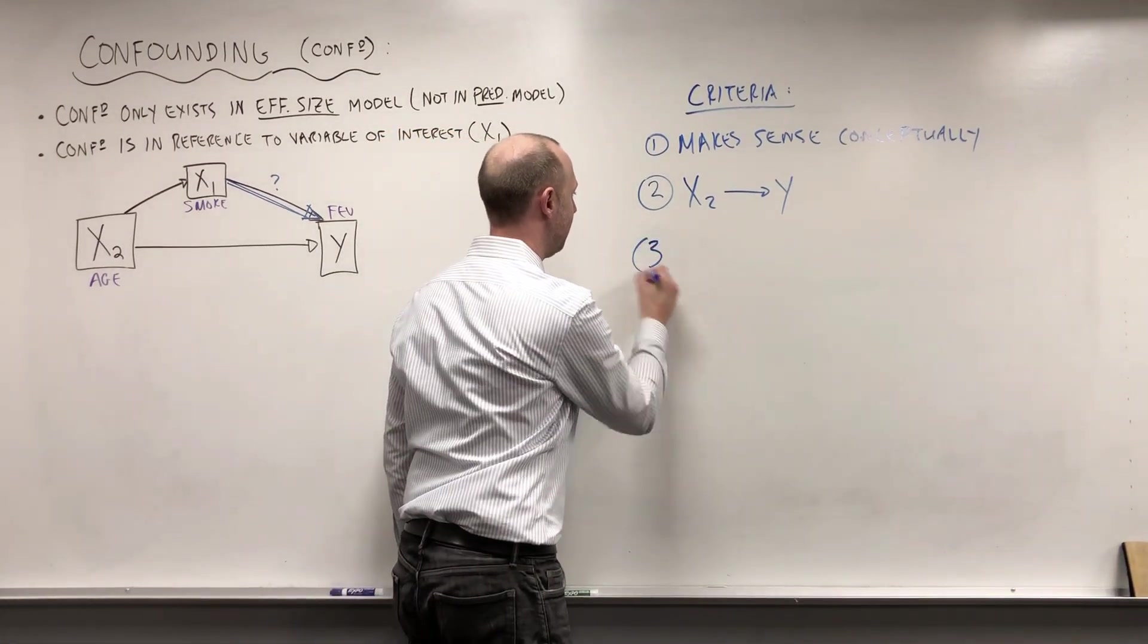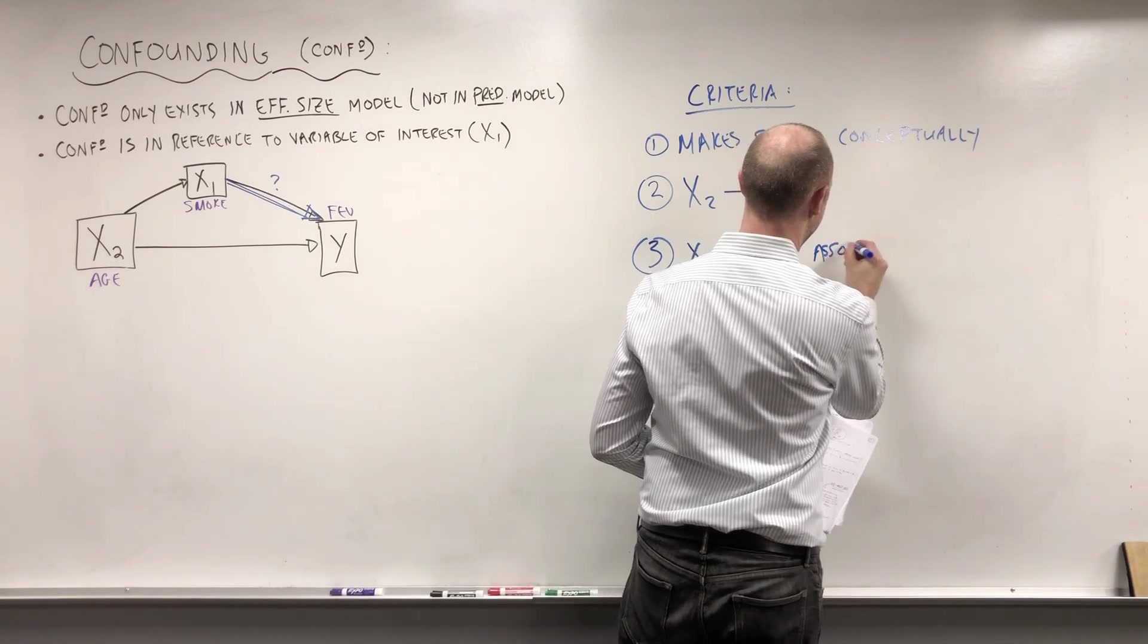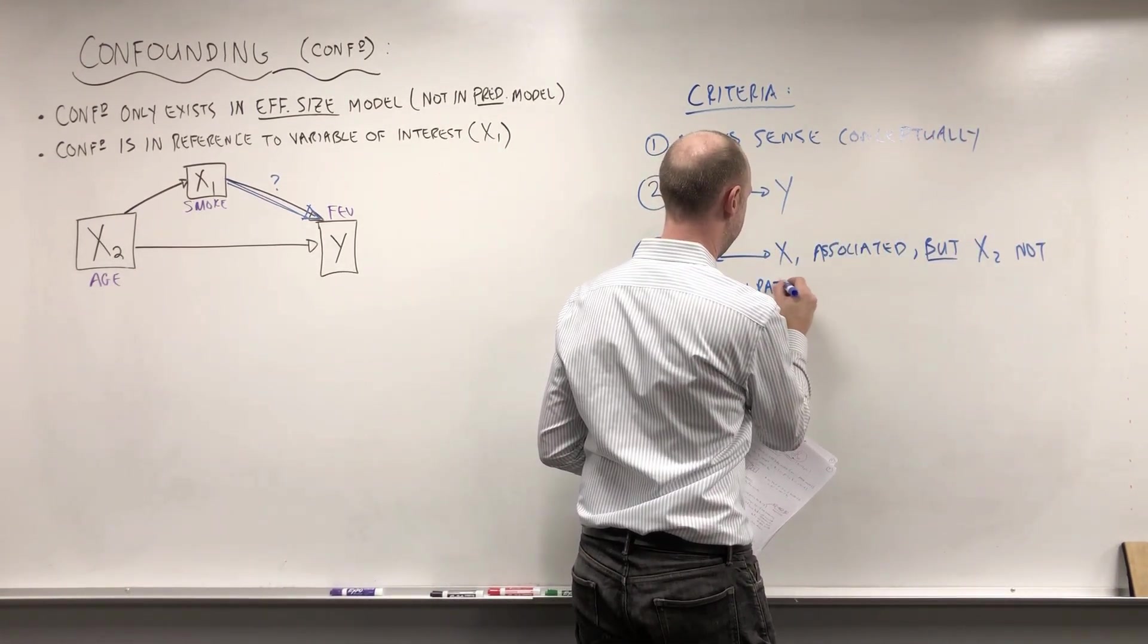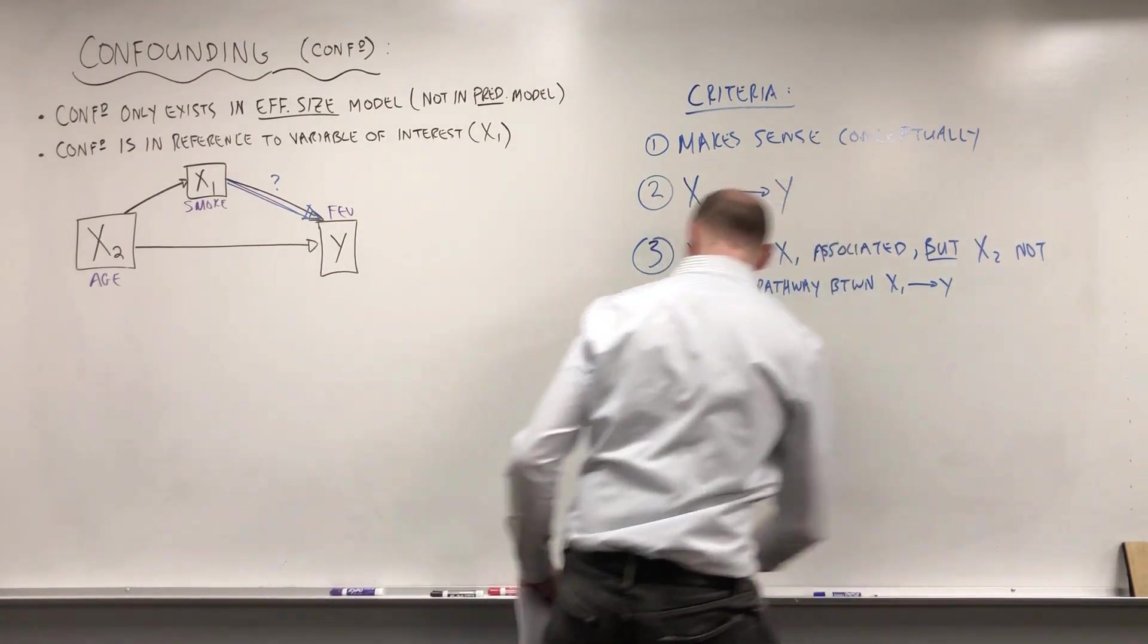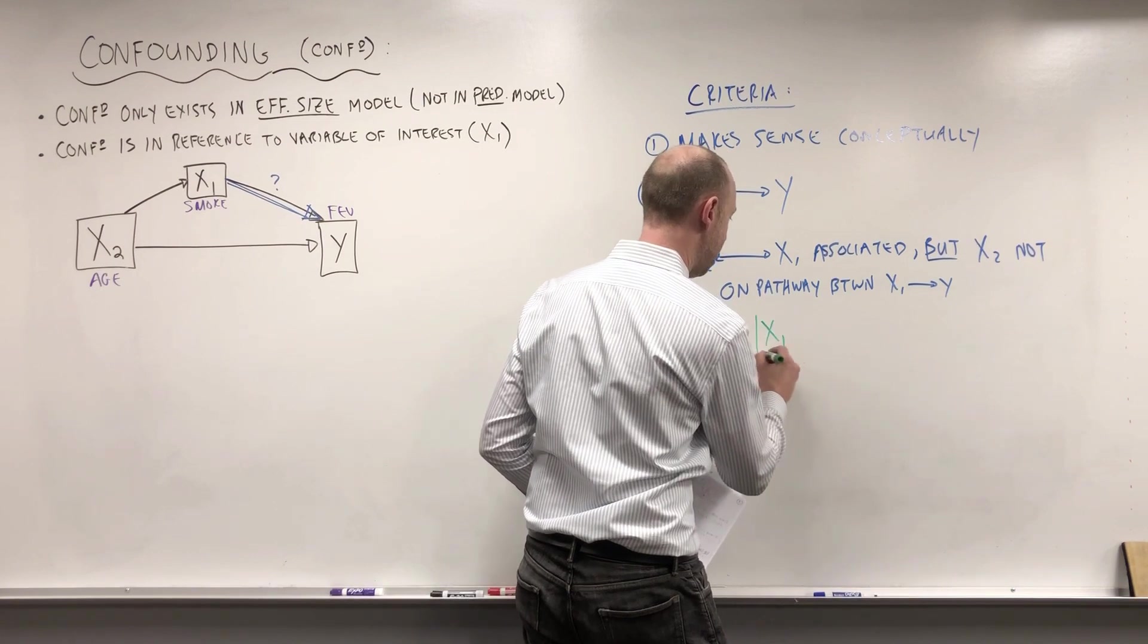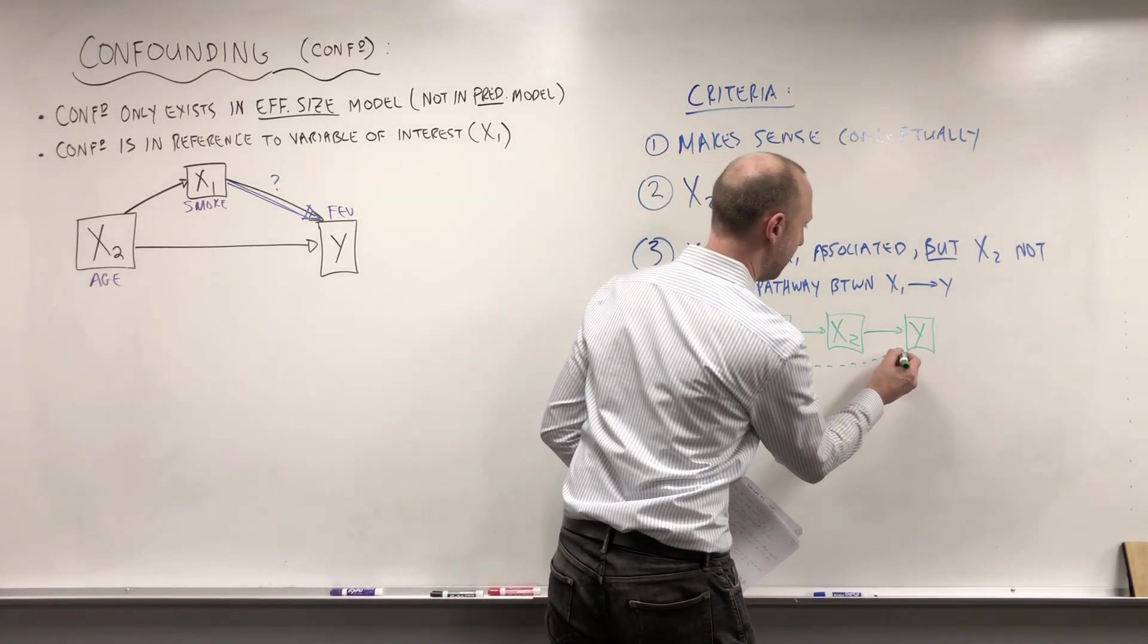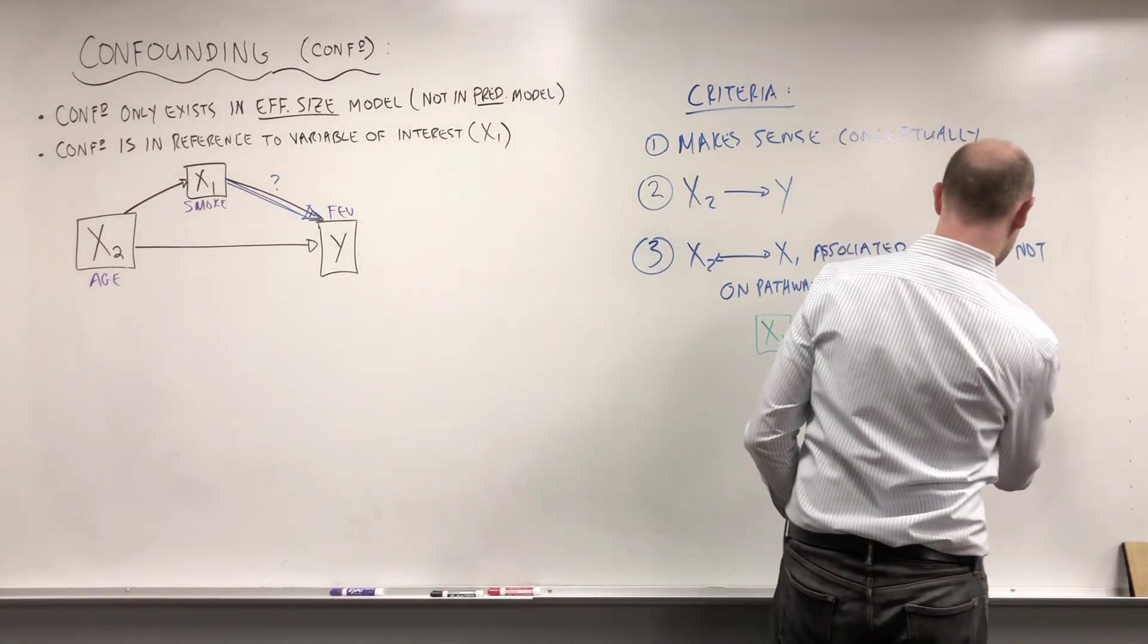Another criteria is that X2 and X1 are associated, but, and this is an important one, X2 is not on the pathway between X1 and Y. Let me give you an example of what I mean by that. That we don't have something like this, where X1 directly influences X2. X1 causes changes in X2, which then leads to the outcome. X1 may or may not also independently affect the outcome. This is looking at X1 directly affects X2, which then in turn affects the outcome. This we call a mediation.